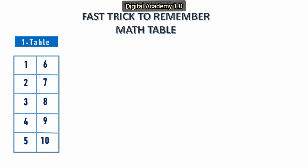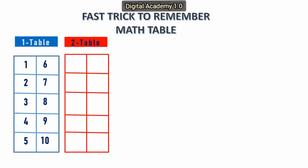Next, let us see the two table. For that, we have to enter the even numbers from 2 to 20. We know the even numbers are 2, 4, 6 and so on. So like that we have to enter here: 2, 4, 6, 8, 10, 12, 14, 16, 18, 20. This is the 2 times table.